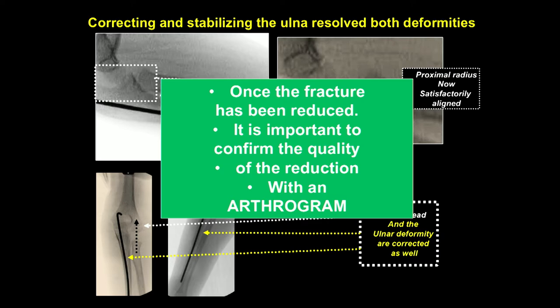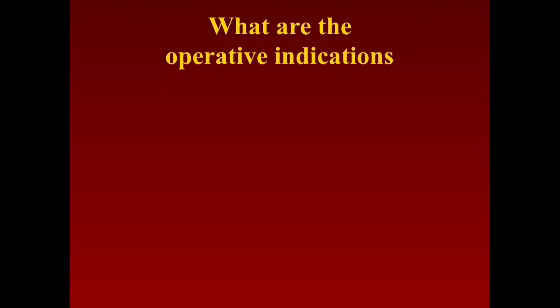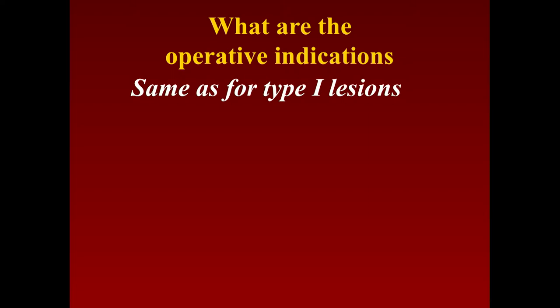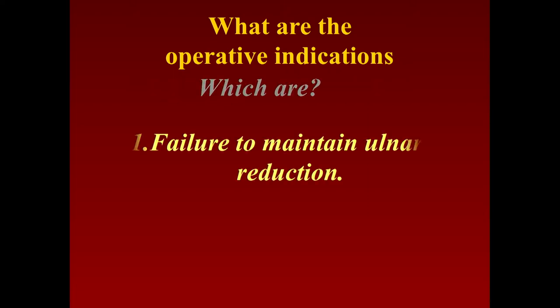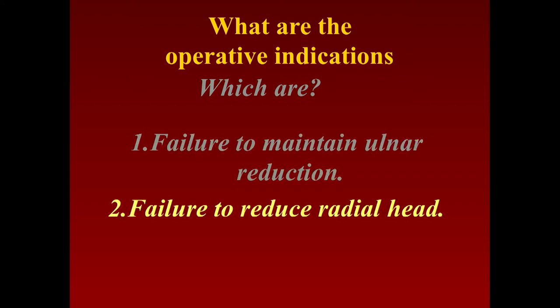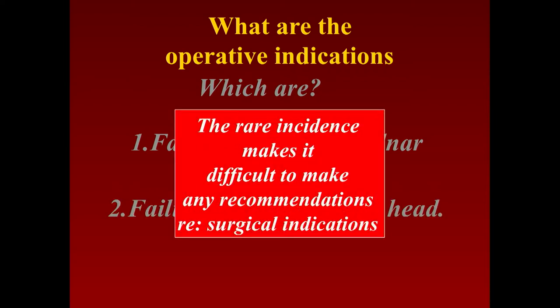You shouldn't leave the operating room until you confirm you've got a good concentric reduction of both the radius and the ulna with an arthrogram. The operative indications for type 2 — because this is such a rare injury, very rarely do you need to operate. It's probably the same as for type 1 lesions: failure to maintain the ulnar reduction, or failure to reduce the radial head.